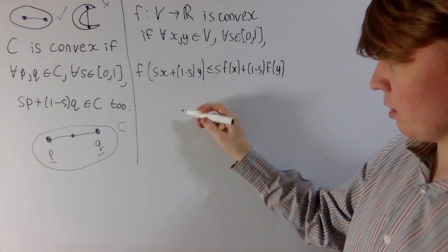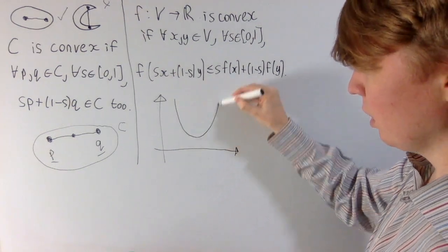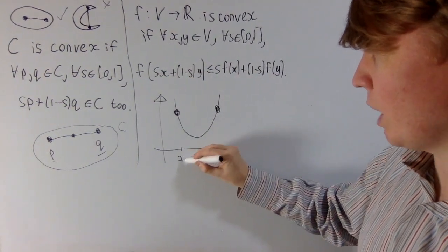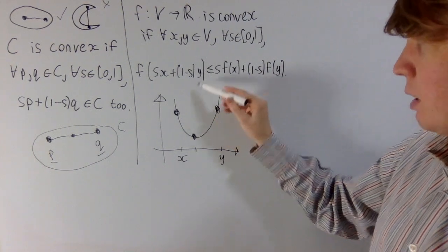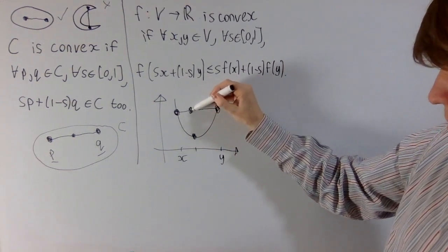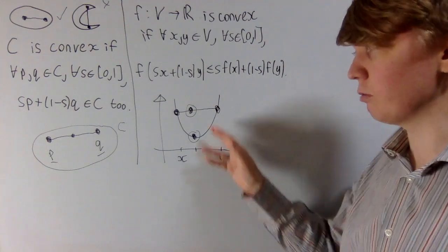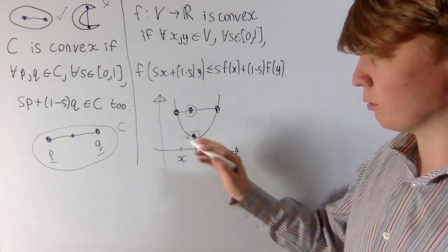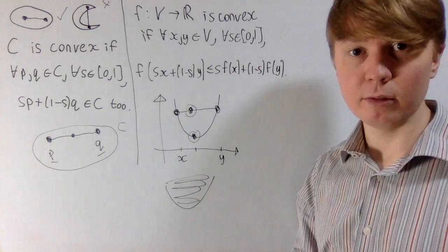This is a little strange but connected. If you imagine our function F mapping from the reals to the reals and look at the graph, you can make sense of the definition pictorially. For points X and Y, what we're saying is that F of some point between X and Y — basically the height of this point — is less than or equal to the corresponding height on the chord between those two points. More generally, for a convex function from the reals to the reals, the chord between two points always lies above the function, and the region above the function is always itself a convex set.